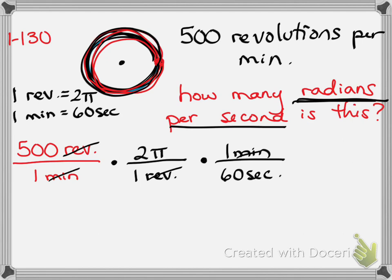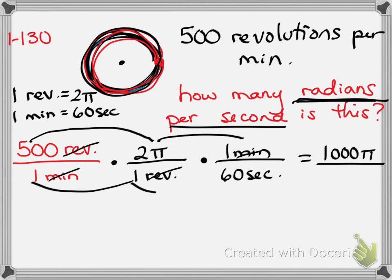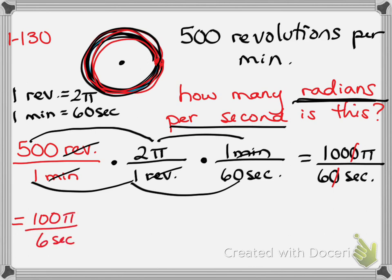So minutes are gone, and we get 500 times 2 pi times 1 – that's 1000 pi over 1 times 1 times 60 seconds. Let's divide these both by 10. And 100 over 6 – that is 50 pi over 3 seconds. So 50 pi radians per 3 seconds.